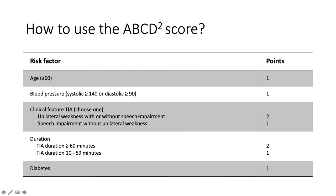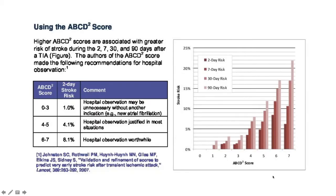You score the person based on all these points and then add them together. Based on the total, you can estimate the risk of getting a subsequent stroke after this TIA. Over here there's statistical data about the risk of stroke based on the ABCD2 score. As you can see, as the ABCD2 score increases, the risk of getting a stroke in the next 2 days, 7 days, 30 days, and 90 days increases.